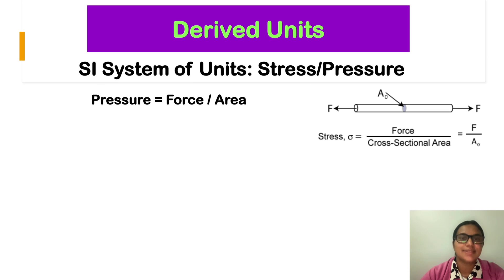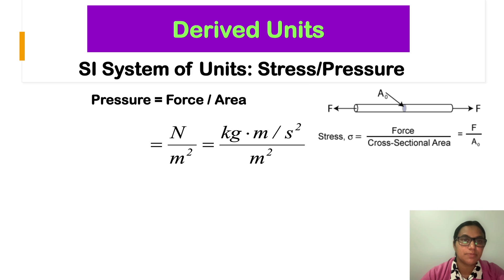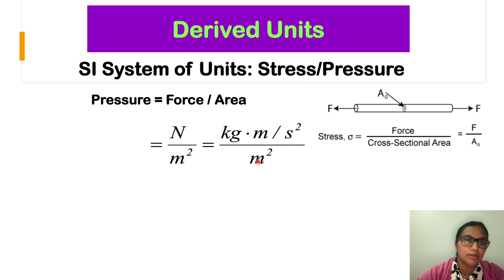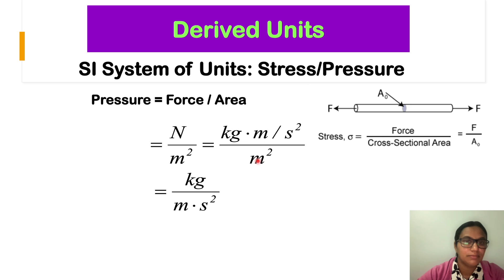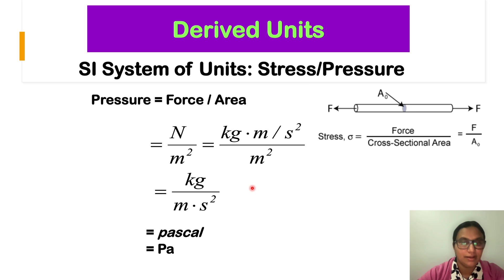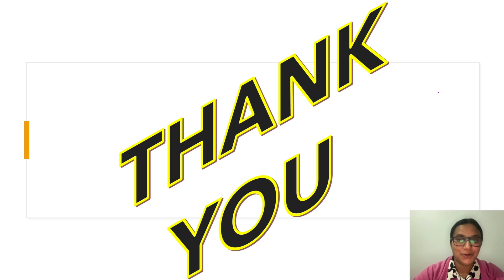Another derived unit is stress or pressure, which is force per area — newton per meter squared. Since newton equals kilogram meter per second squared, dividing by meter squared cancels one meter, resulting in kilogram per meter per second squared, which is also known as pascal, represented by Pa.